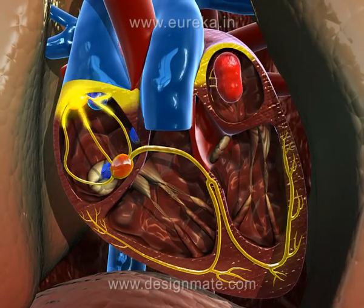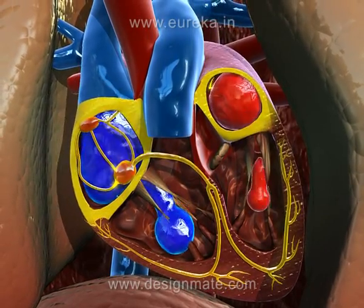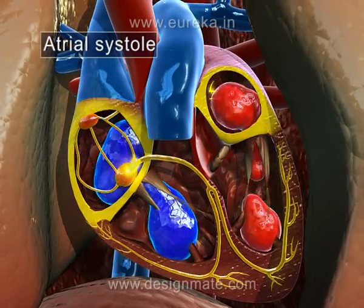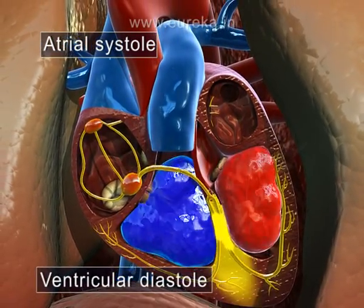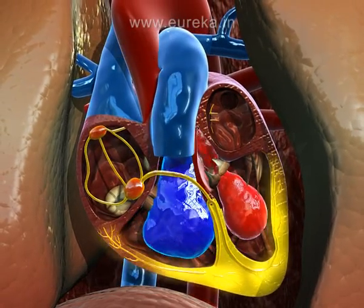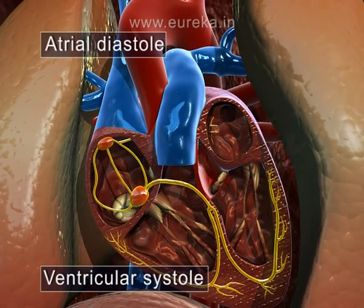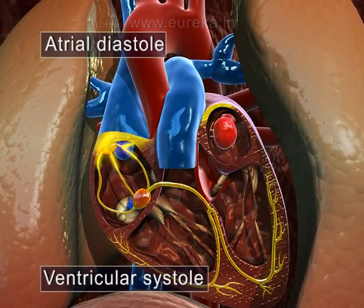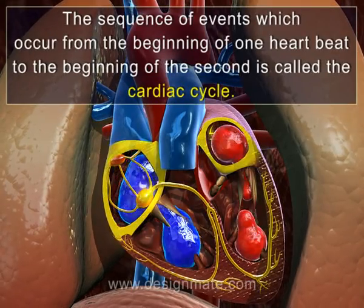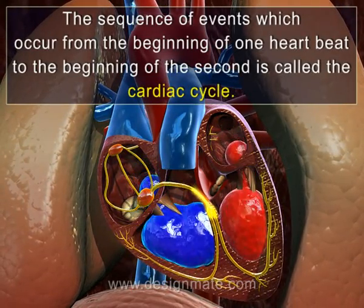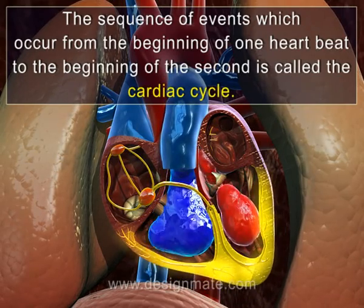Inside the heart, blood flows in a specific direction. The contraction of the atria is called the atrial systole, at which time the ventricles are in diastole. Then the ventricles contract, and this is called ventricular systole, while the atria are in diastole. This sequence of events, which occurs from the beginning of one heartbeat to the beginning of the next, is called the cardiac cycle.